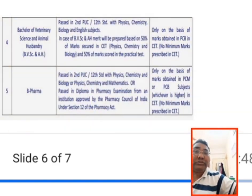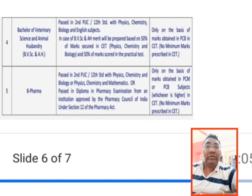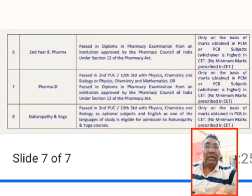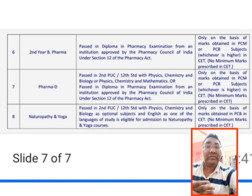The fourth course is Bachelor of Veterinary Science — B.V.Sc. and Animal Husbandry — admission for both is through KCET. The fifth is B.Pharma, for which students who passed with Physics, Chemistry, and Biology or Physics, Chemistry, and Maths are eligible. Additionally, diploma students who have passed can get direct admission into the second year of B.Pharma through KCET.